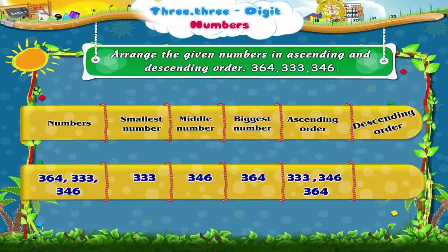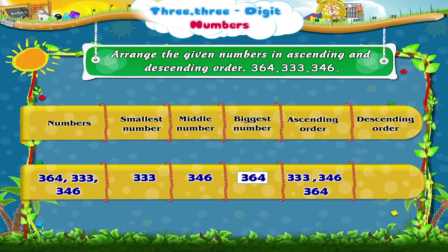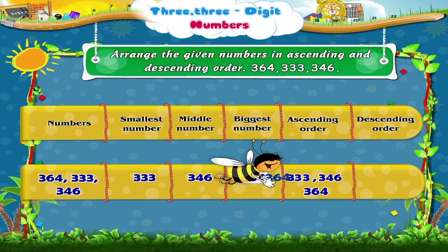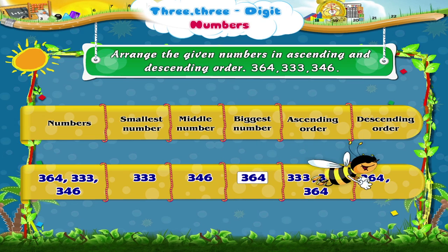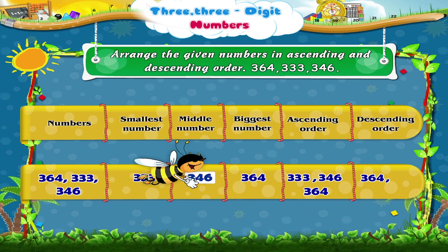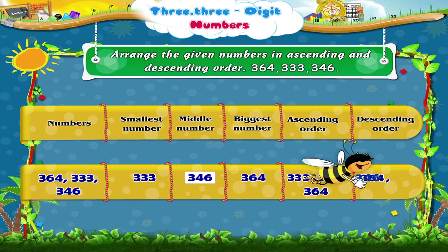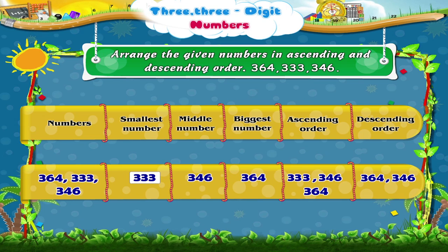And the descending order — that is, from the biggest to the smallest numbers — is 364, 346, and 333.